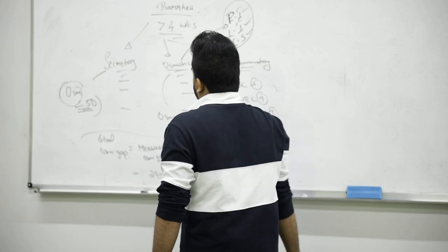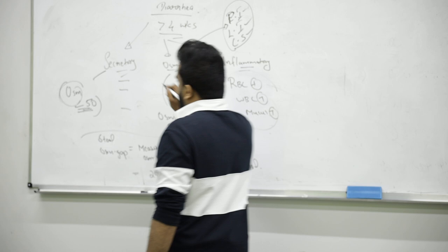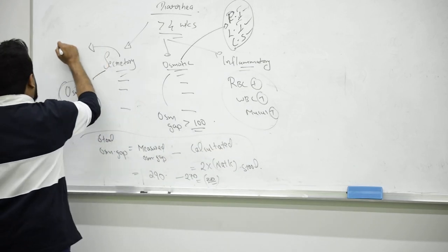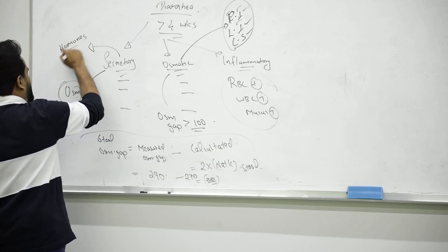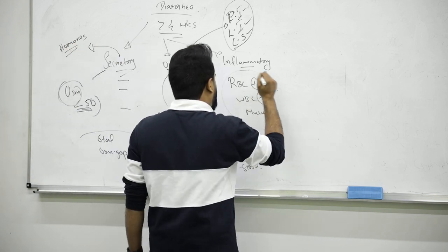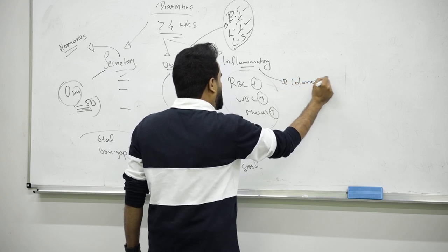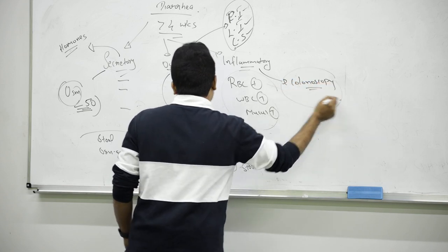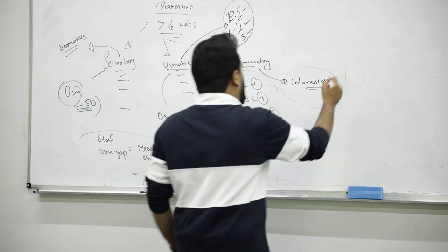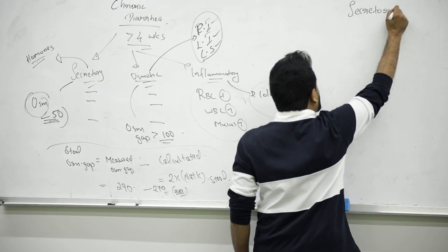Secretory means some hormones are being secreted. We mainly care about two things: VIPoma and carcinoid, and Zollinger-Ellison. For inflammatory, we do colonoscopy for IBD and others we already talked about. We're interested here in two main secretory types. We already studied Zollinger-Ellison syndrome gastrinoma.